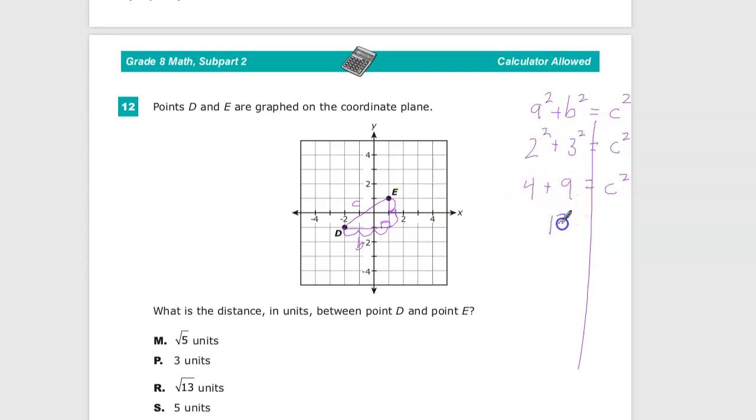Anyway, four plus nine is 13. We're down at our final step. We're not looking for the value of C squared, as you can see. We're looking for the value of C. So I need to eliminate this to the second power. Well, the opposite of to the second power is to square root or take the second root.